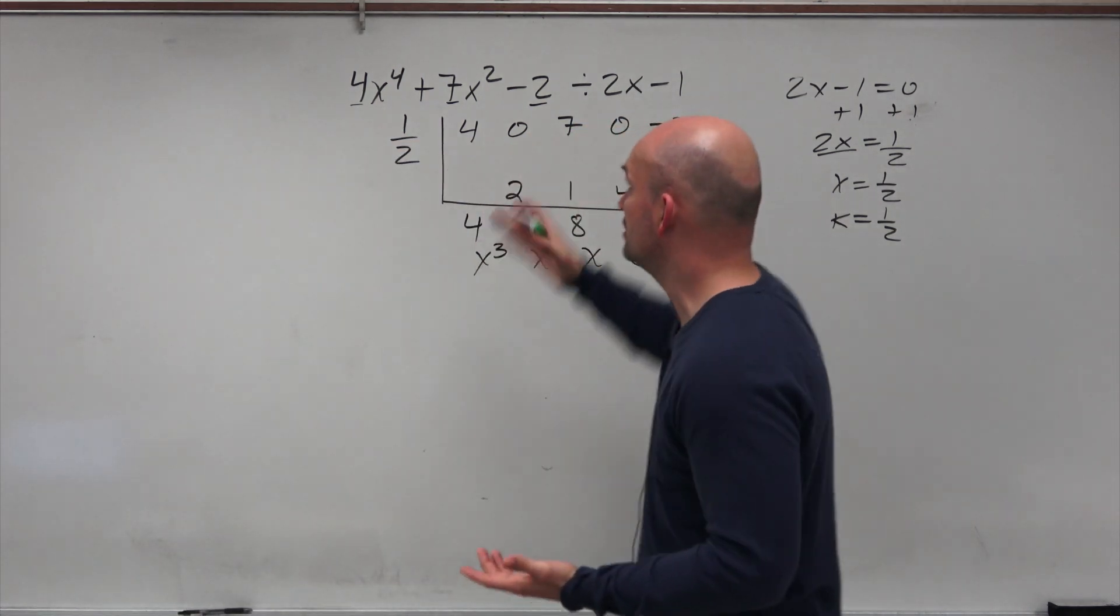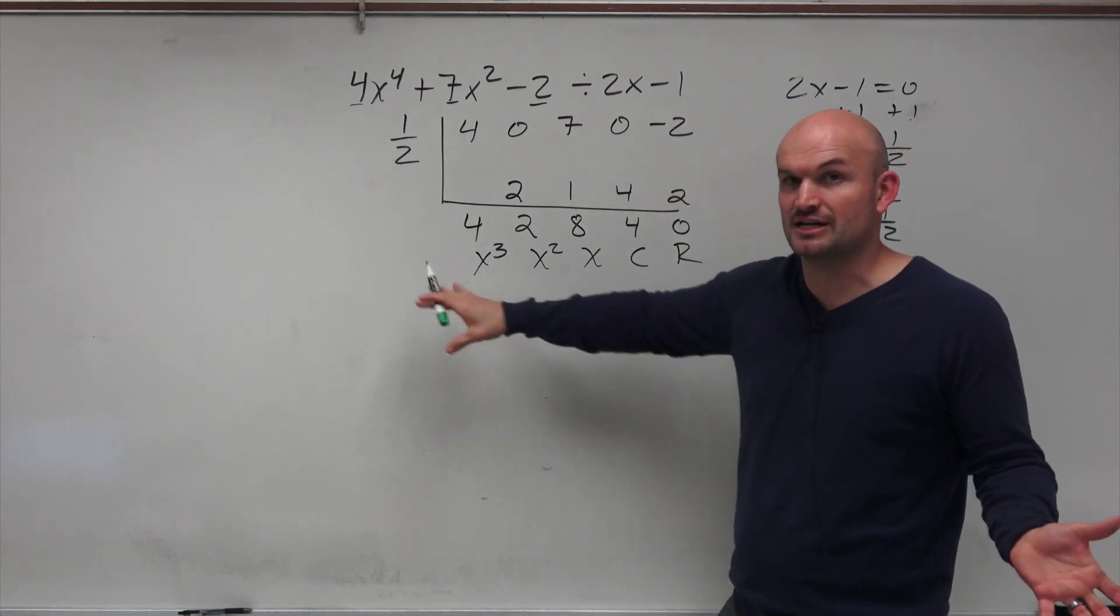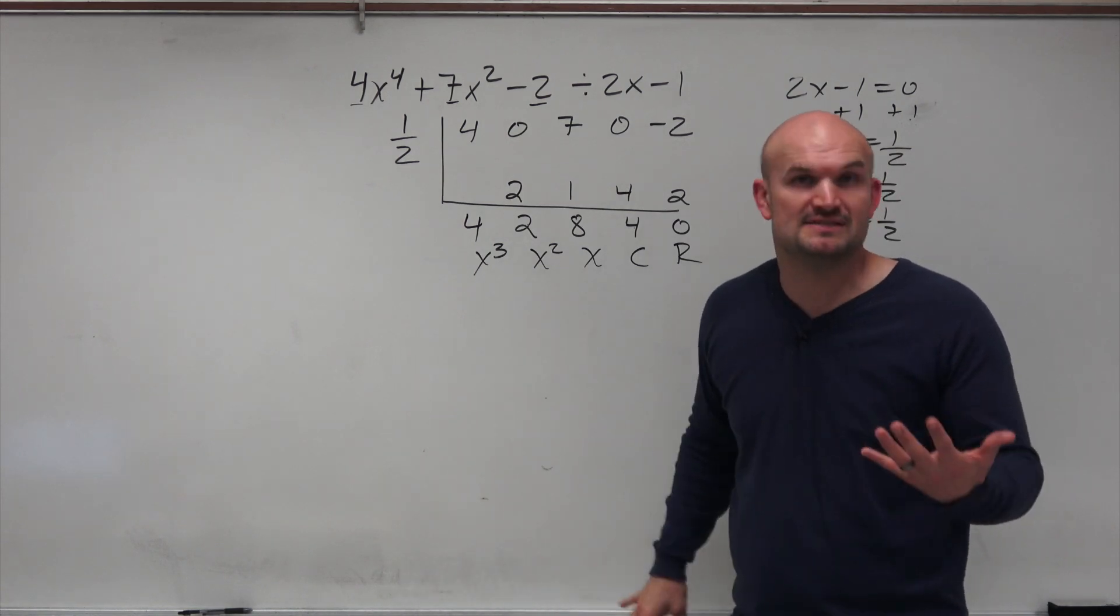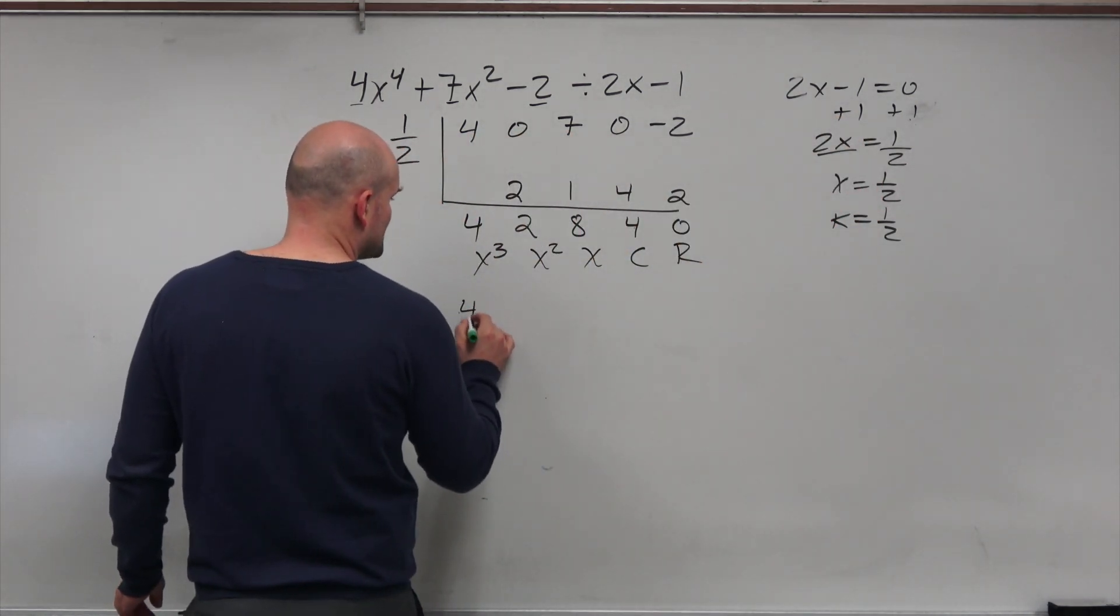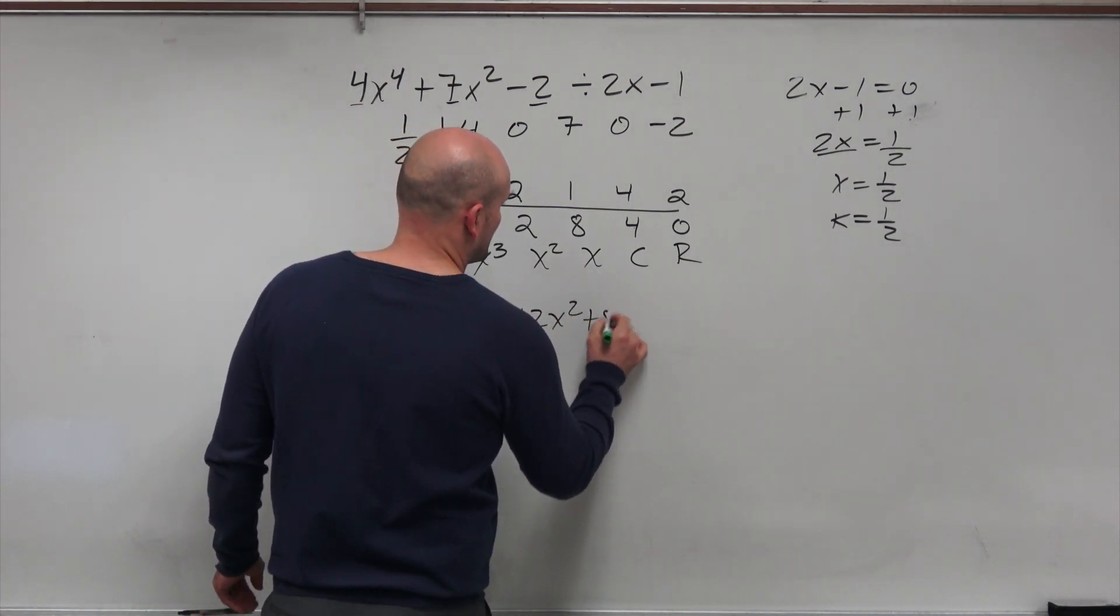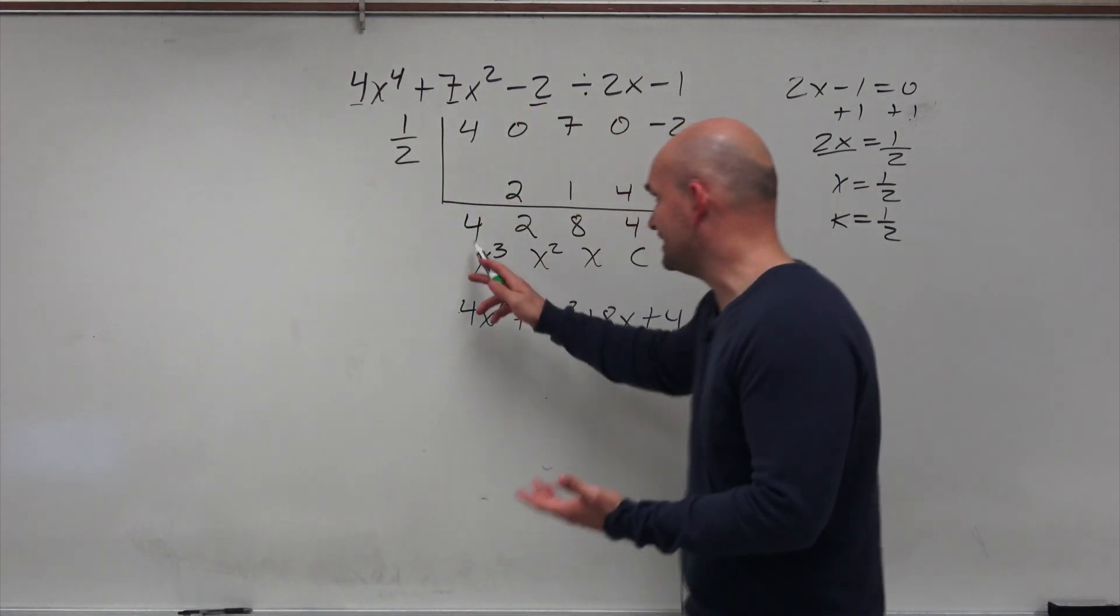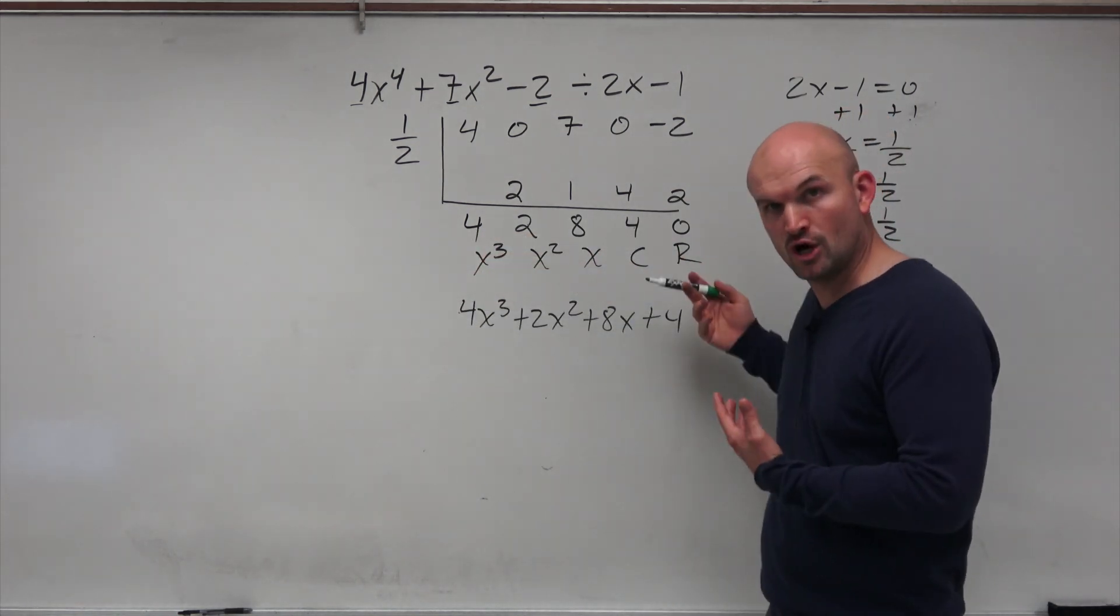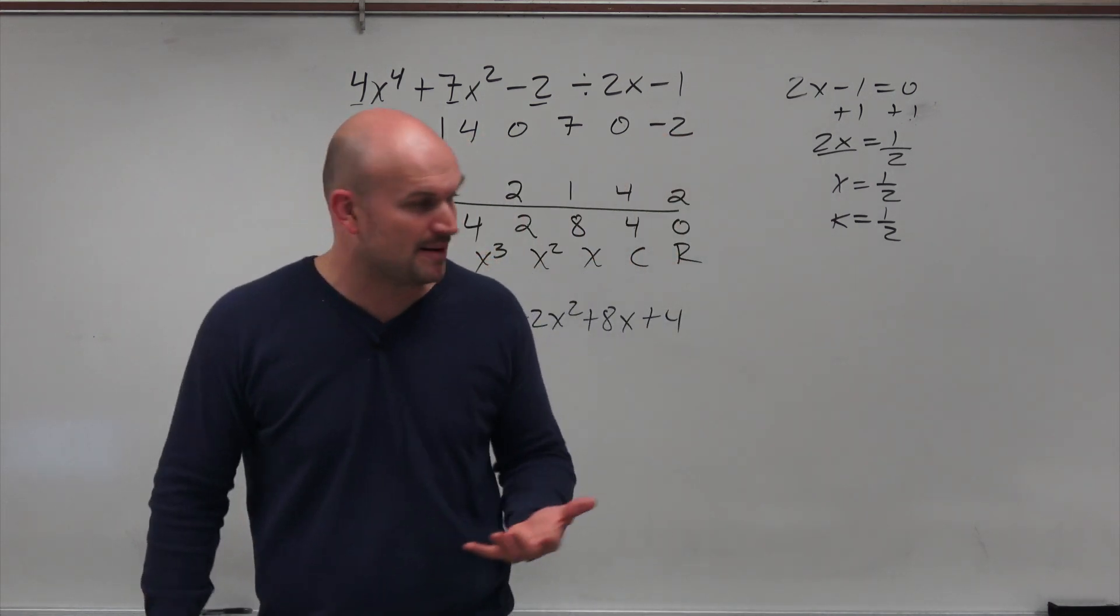To do synthetic division, we extracted the coefficients. So it makes sense that our answer is going to be in coefficients. We just need to now put them back together to give us a polynomial. So now I can rewrite my quotient as 4x cubed plus 2x squared plus 8x plus 4. So the first mistake is just not understanding that these are the coefficients as well as what these numbers mean and where do they go as far as writing the quotient polynomial.